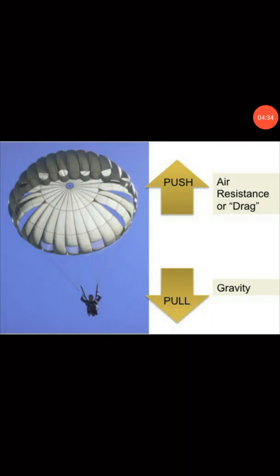This is how, using different ways, the streamlining process reduces air resistance, and thus the speed of the object or vehicle can be increased. Air resistance also acts on objects which are in the air. In this image, air resistance is acting on a parachute. The parachute is coming down towards the earth, so the force of gravity is acting on that parachute, pulling it downwards.